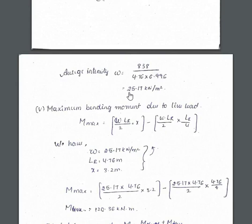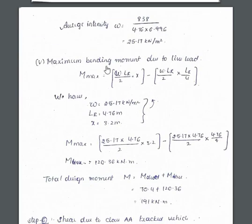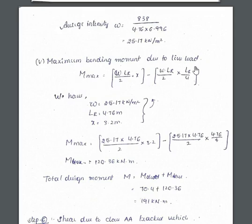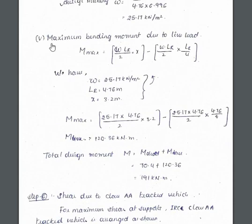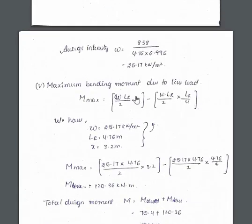Next, maximum bending moment due to the live load. After getting this, find out the maximum bending moment. The formula is W into LR by 2 into X minus W into LR by 2 into LR by 4. Here X value again we have to take 3.2 initially because the maximum bending moment for a simply supported beam occurs when the load is acting at the center.